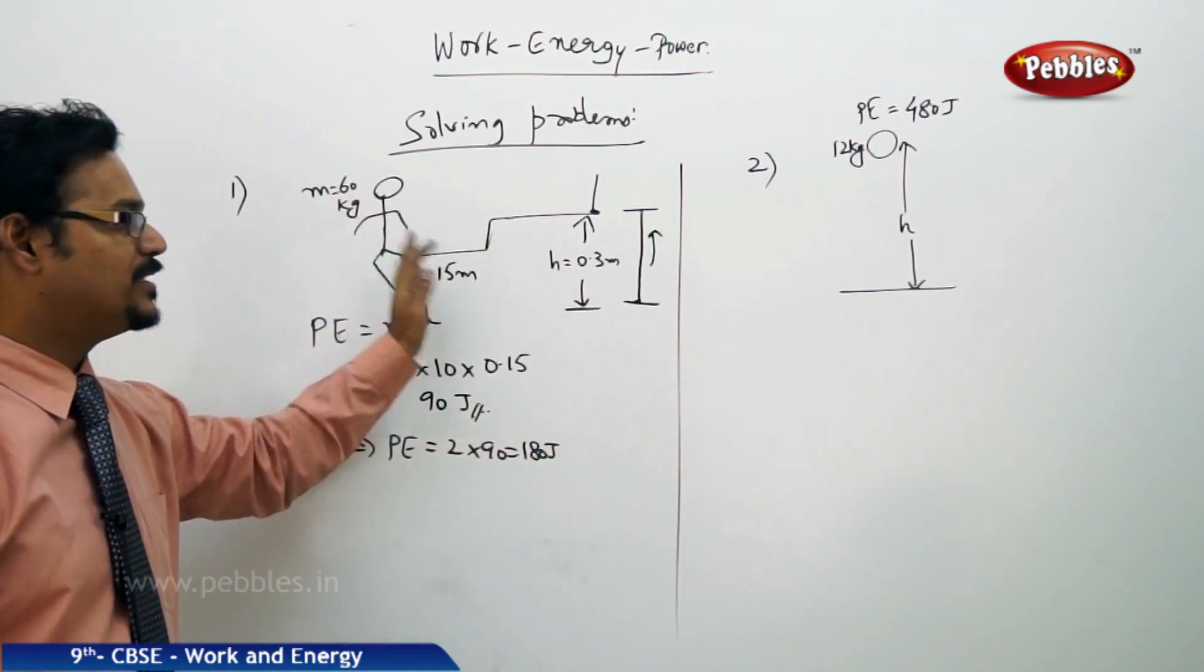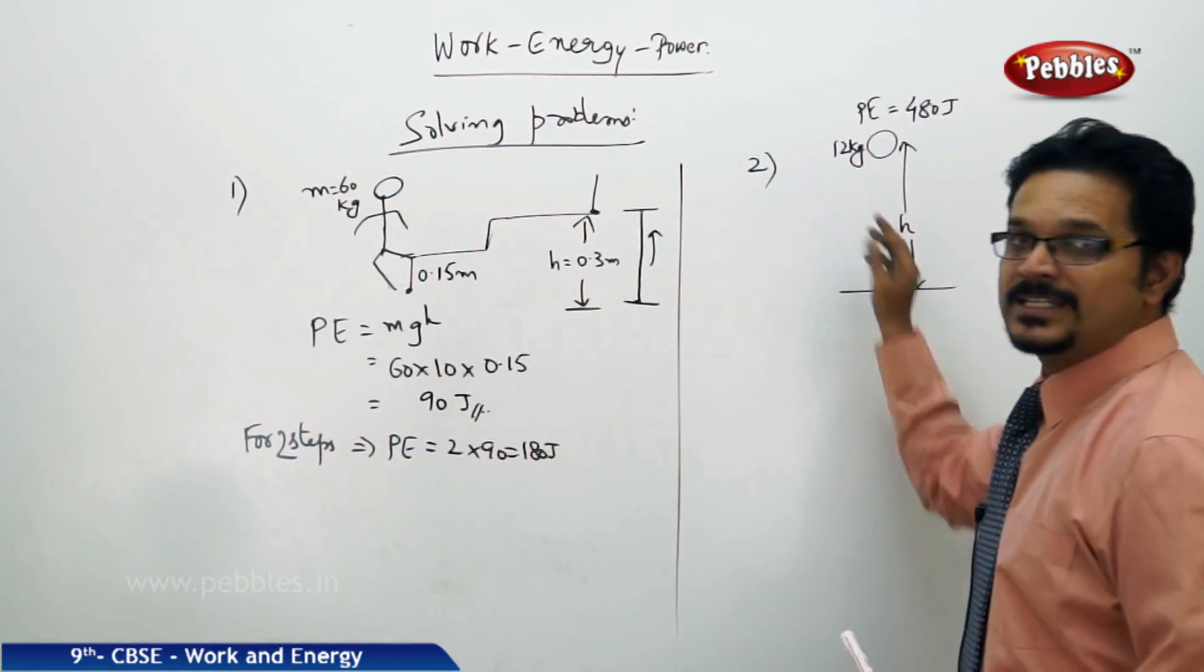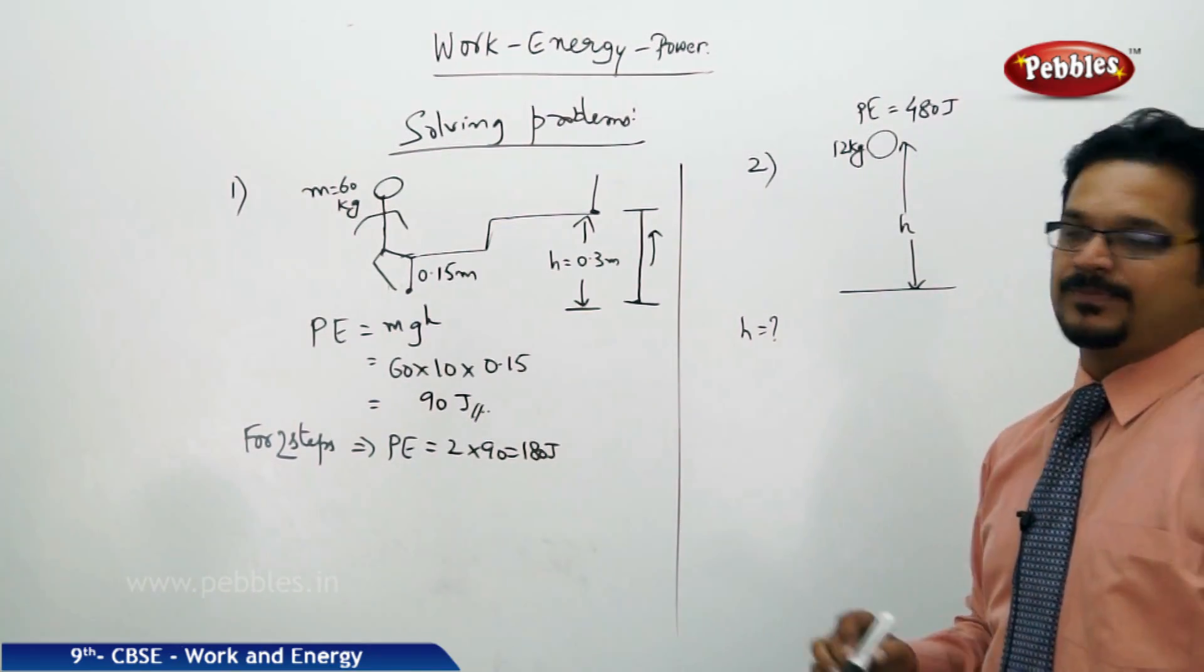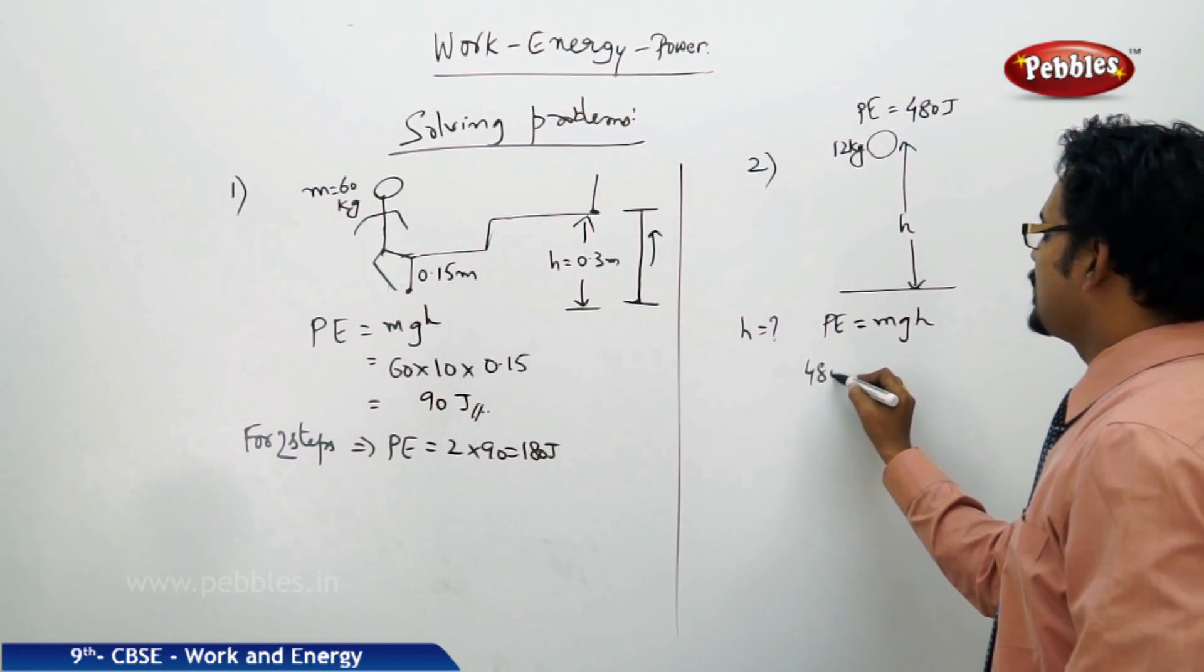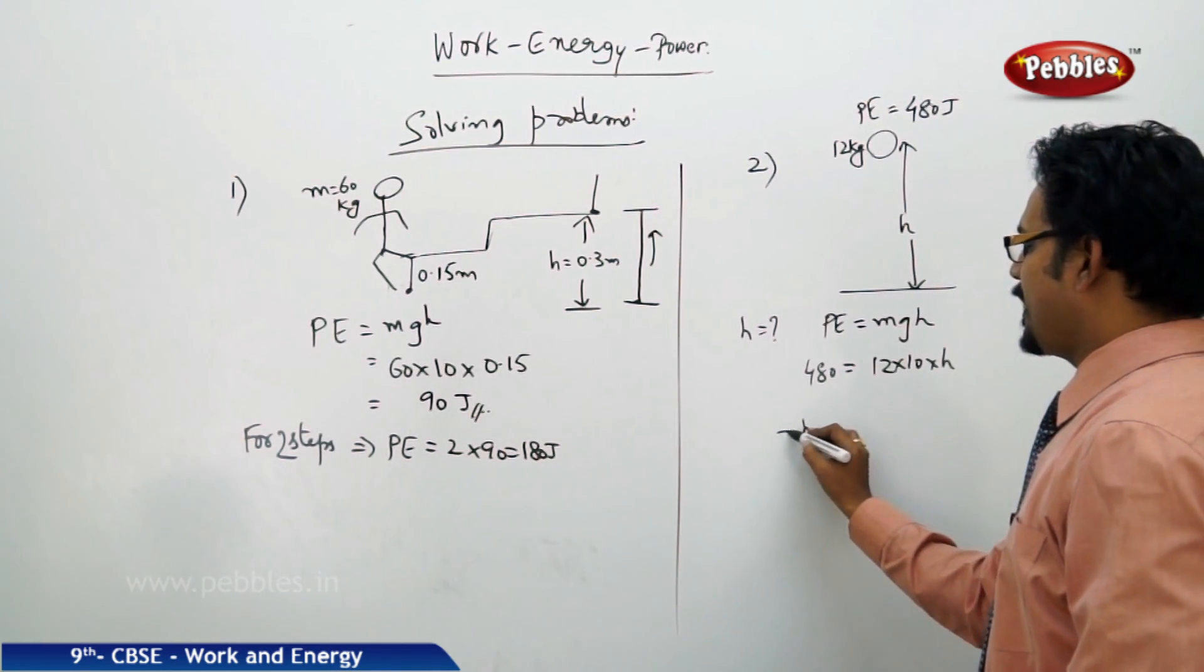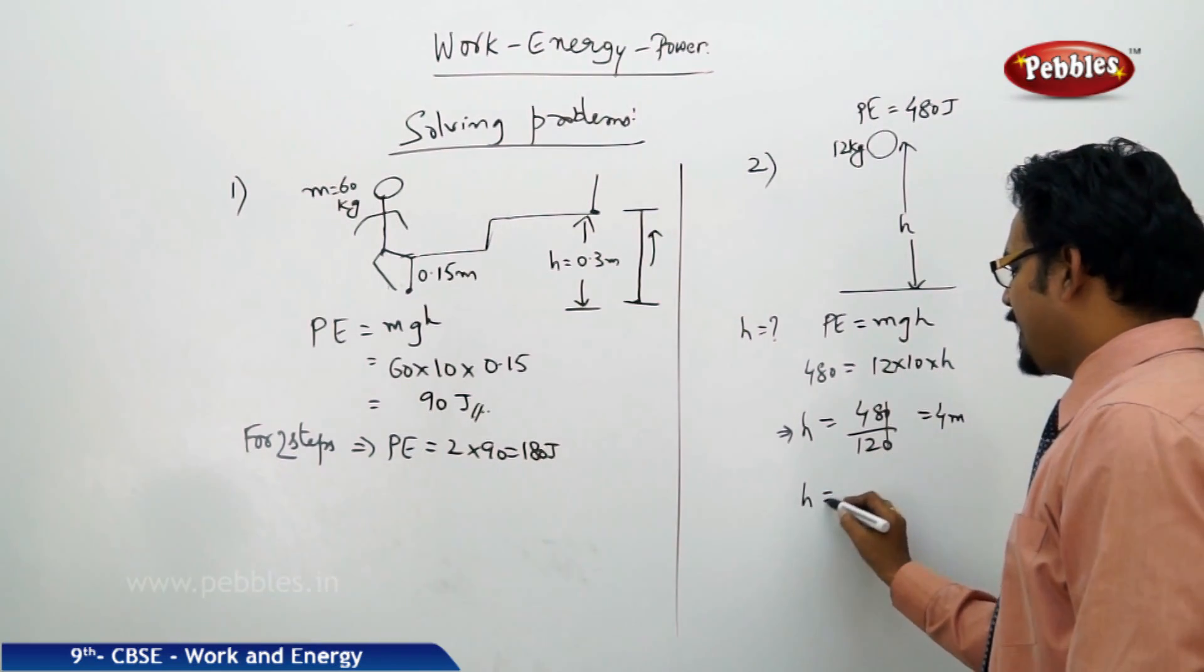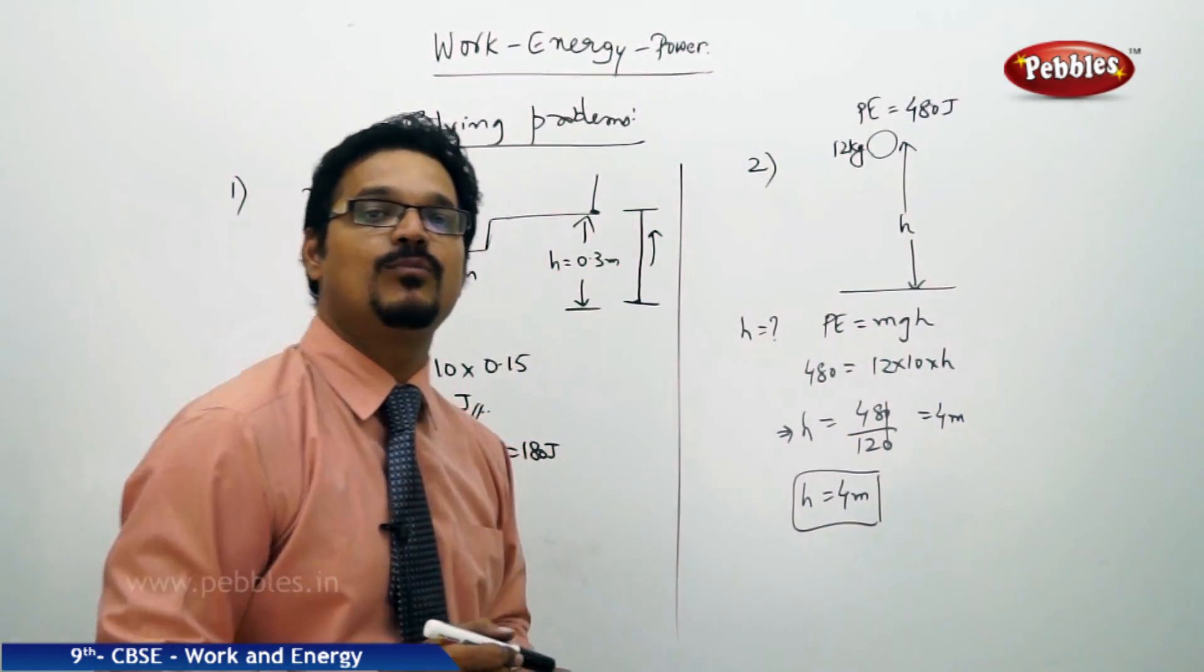The second one: a body of mass 12 kg is lifted up to height h, then it has potential energy 480 joules. The question is what is the amount of height it is raised? We apply PE equals mgh formula again. 480 equals mass 12, g is 10, height h. So height h equals 480 divided by 120, which is 4 meters.